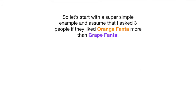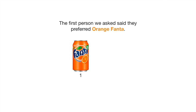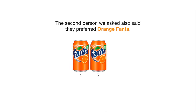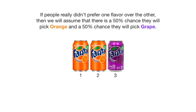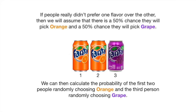So let's start with a super simple example and assume that I asked three people if they liked orange Fanta more than grape Fanta. The first person said they preferred orange Fanta. The second person also said they preferred orange Fanta. And the third person said they preferred grape Fanta. If people really didn't prefer one flavor over the other, we will assume there's a 50% chance they will pick orange and a 50% chance they will pick grape. We can then calculate the probability of the first two people randomly choosing orange and the third person randomly choosing grape.